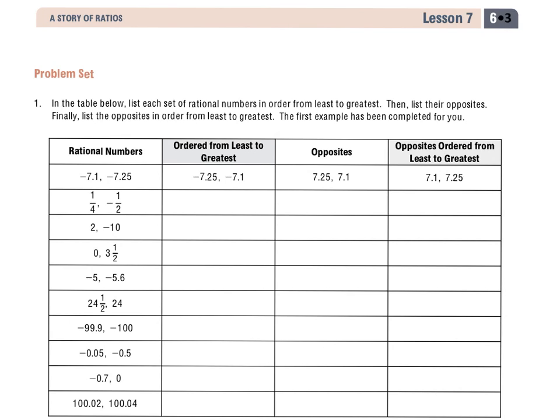The first example has been completed for you. So if we look at the first example that was completed, you have negative 7 and 1 tenth and negative 7 and 25 hundredths. They're saying that negative 7 and 25 hundredths is least, or further to the left on the number line, than negative 7 and 1 tenth. And then they're finding the opposites of those, and then they're relisting them from least to greatest.